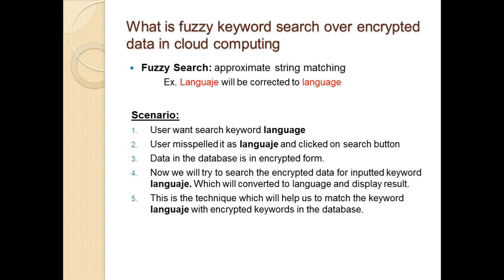Consider a scenario where a user wants to search the keyword 'language', misspells it, and clicks the search button. The data in the database is in encrypted form. We will try to search the encrypted data for the inputted misspelled keyword, which will be corrected to 'language' and the result will be displayed. The technique used to match the keyword with encrypted keywords in the database is called fuzzy keyword search over encrypted data in cloud computing.